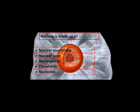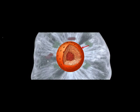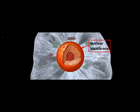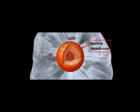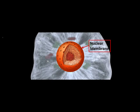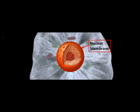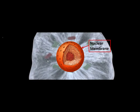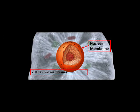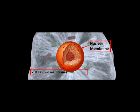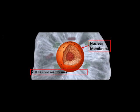The nuclear membrane is a double membrane and is discontinuous. It maintains the shape and individuality of the nucleus. That is, it separates the content of the nucleolus from the surrounding cytoplasm.